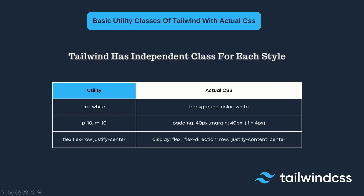For example, 'bg-white' means the background is white. The actual CSS being applied is the 'background-color' property set to white. So the Tailwind utility class 'bg-white' is equivalent to that CSS 'background-color' style.